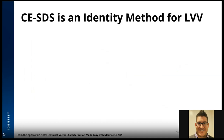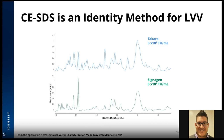As cell and gene therapy manufacturers increase the number of programs run concurrently, the need for identity assays becomes even more critical. We compared two lentiviral vendors and showed that our CESDS assay is an identity assay, similar to monitoring different programs. Two vendors of LVV with the same genetic insert analyzed at the same concentration show complex profiles, but vendor 2 has fewer peaks than vendor 1, with clear differences in the profile. We've now completed our AAV and lentiviral work, and I've recently started working on adenovirus.